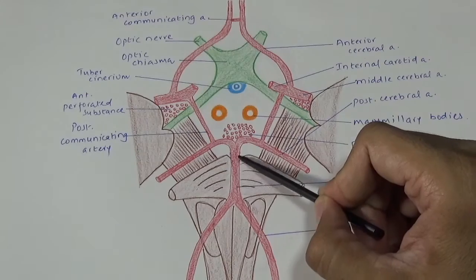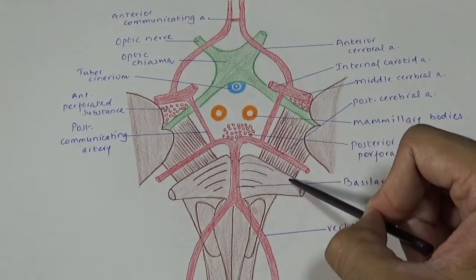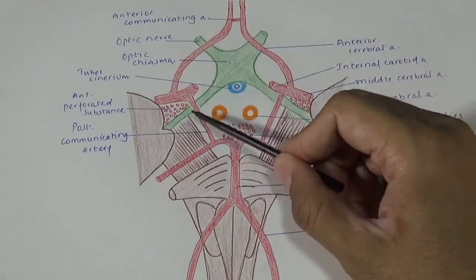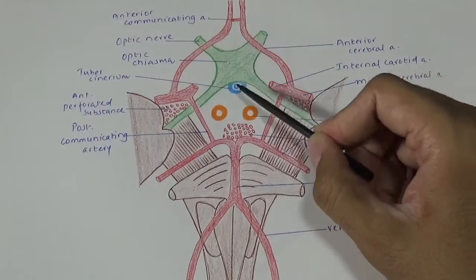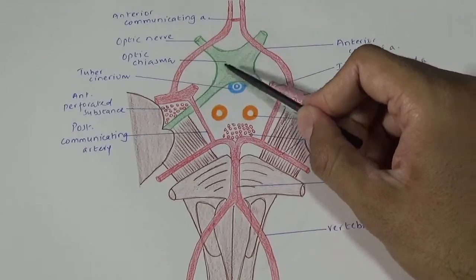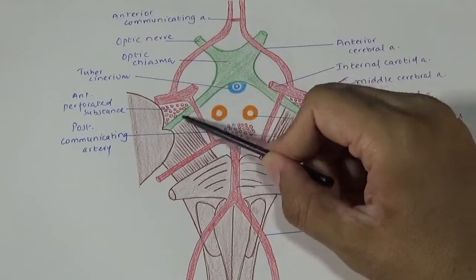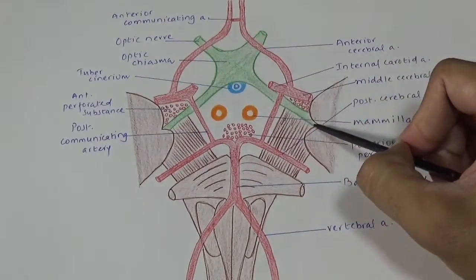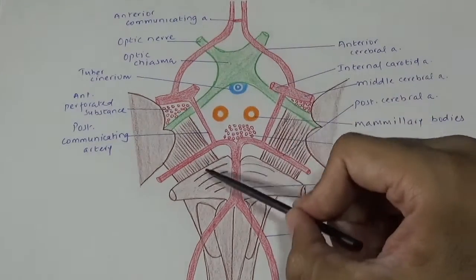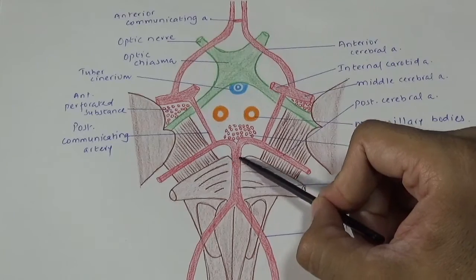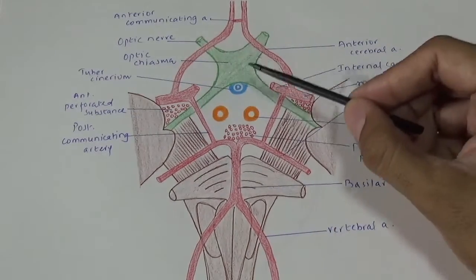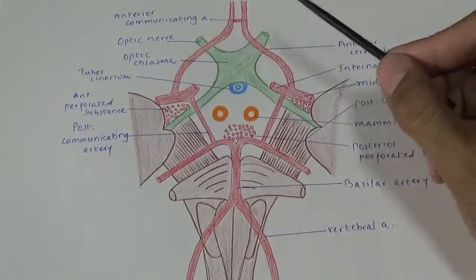This is the upper border of the pons. Now let's see the boundaries of the interpeduncular fossa. It is bounded anteriorly by the optic chiasma, anterolaterally by the optic tract, posterolaterally by the basis pedunculi, and posteriorly by the upper border of the pons. Now let's see the structures found within this fossa.